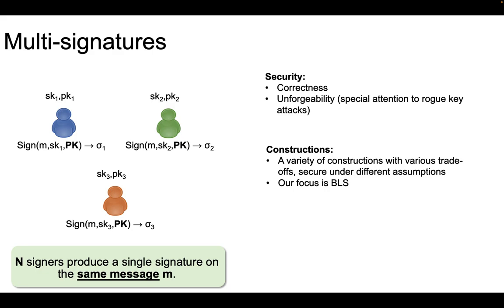Of particular interest for this talk are multisignature schemes whose verification algorithm is fully compatible with algorithms supported by blockchain systems today. Such schemes include SNOW and BLS. The specific focus of this work is the BLS-based multisignature, and we focus on this scheme due to its elegant way to avoid rogue key attacks and due to its very efficient aggregation properties.